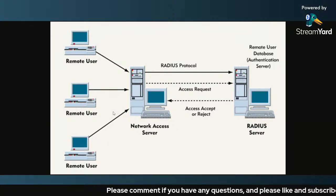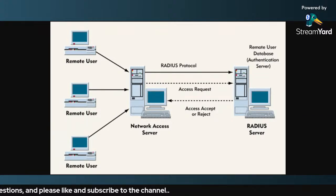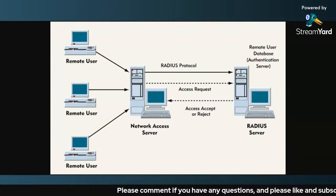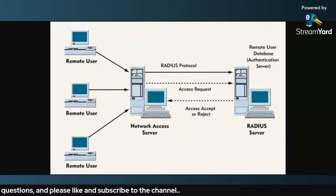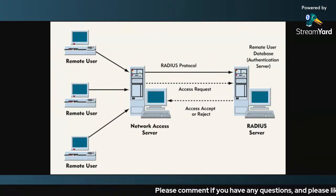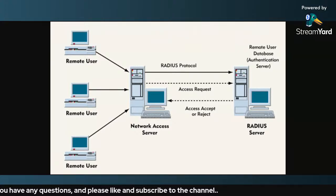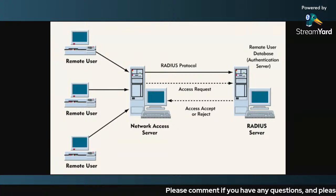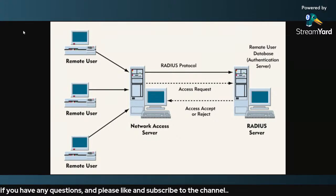Whenever a remote user requests access to the network access server or remote access server, it uses the RADIUS protocol and sends an access request. The RADIUS server already has a predefined remote user database for all remote users in your organization. If the RADIUS server finds that the credentials you provide match the database, it will accept the request; otherwise it will reject it. That's how the RADIUS protocol works.